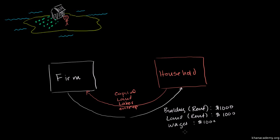And he gets whatever profit comes from the firm, because he is the owner of the firm. You could say that's the compensation in exchange for his entrepreneurship. Looking at these two flows, the household is providing all of the factors of production for the firm so that the firm can produce useful things.